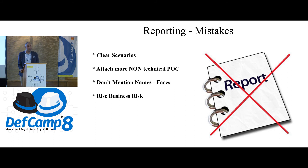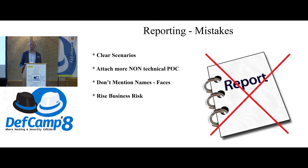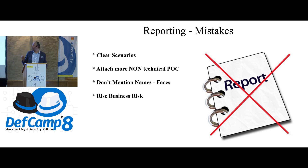For reporting mistakes: put it in scenarios with clear steps — 'I was able to bypass physical security through tailgating.' Be clear in your scenarios. Use non-technical proof of concept because you're talking to management. When you say tailgating or phishing, the manager wants to know the business risk, not the technical details. Also, don't mention names or faces in the report — there are bad managers who use reports to fire people. Just say 'I was able to bypass the IT department through a person' — don't say their name or show their face.